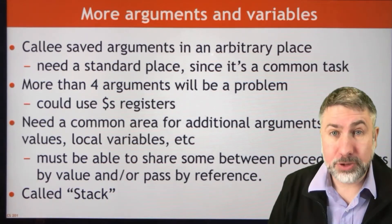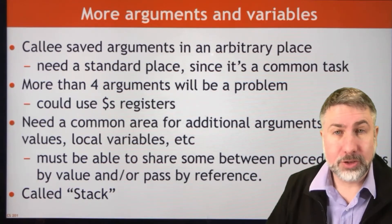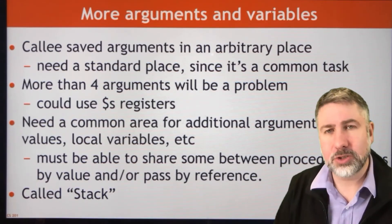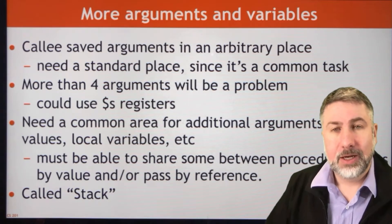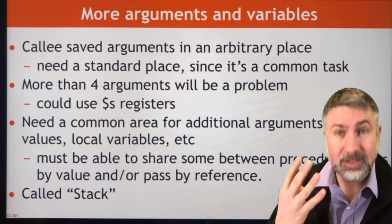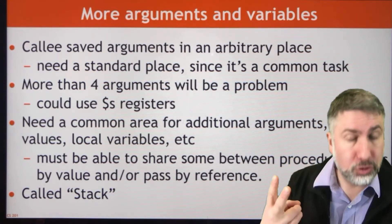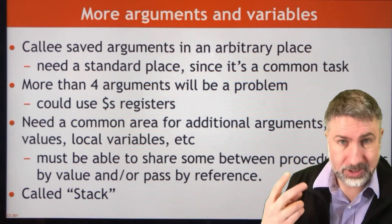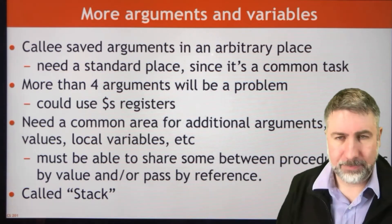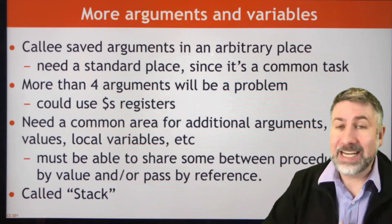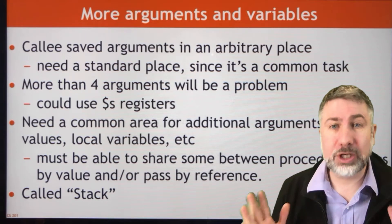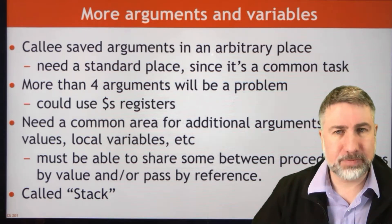When we are doing a subroutine call using the register procedure that we just looked at, we can have up to four arguments, up to two return values, and up to one level of procedure call. If we need anything more than any of those, we're going to have to do something special.